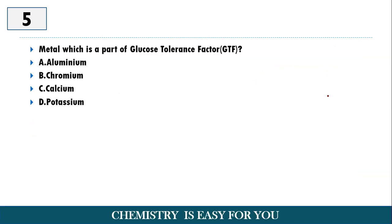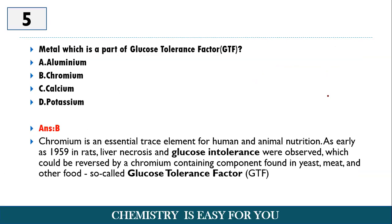Metal which is a part of the glucose tolerance factor or GTF is: aluminum, chromium, calcium and potassium. As you know, all the four metals given here are really important for the biological system. So option B is the correct answer, which is the part of a glucose tolerance factor.